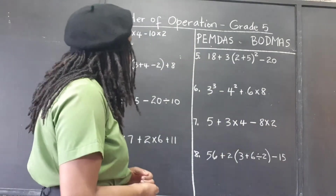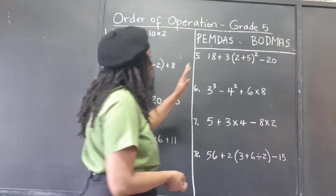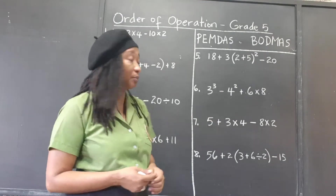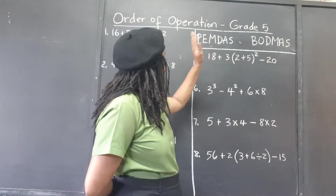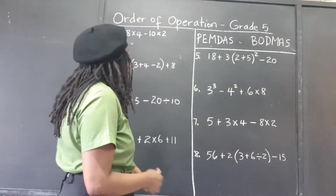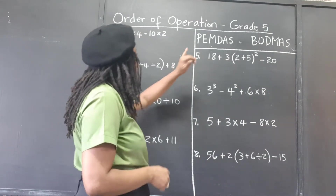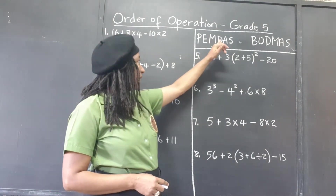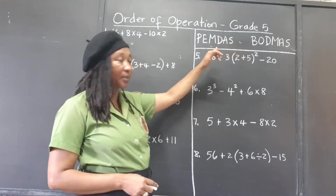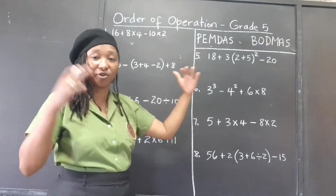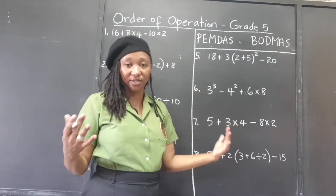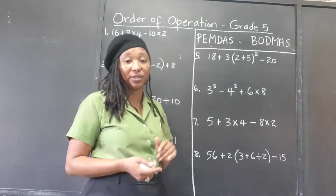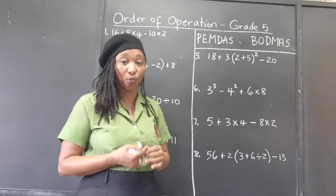We might use any of these two acronyms to help you remember the order that you must go: we have PEMDAS, we have BODMAS. So what this means: parentheses, exponents, multiply, divide, add, subtract. Work the parentheses — or brackets — first. Then work your exponents, those are your powers, your indices.